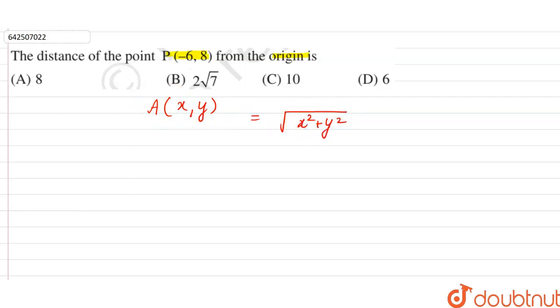plus y square. Right, under root of x square plus y square. So distance of point P from the origin will be equal to, x is here, x is minus 6 and y is 8. Right, so this is